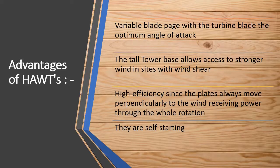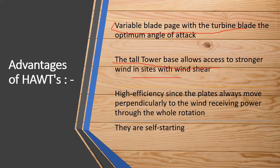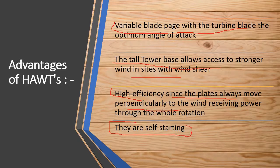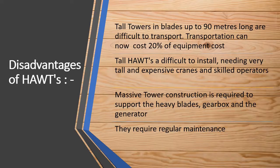Let's discuss the advantages of horizontal axis wind turbines. Variable blade pitch gives the turbine blade the optimum angle of attack. The tall tower base allows access to stronger winds higher up, due to wind shear. They are highly efficient since the blades always move perpendicularly to the wind, receiving power through the whole rotation. Most importantly, HAWTs are self-starting.